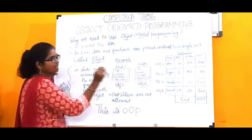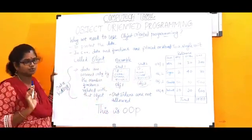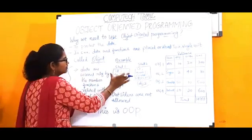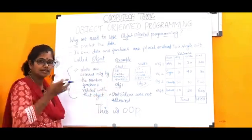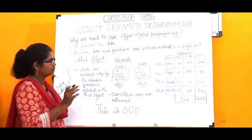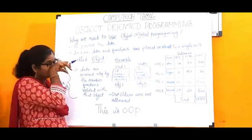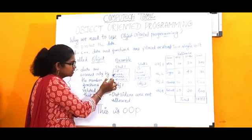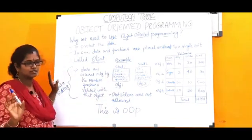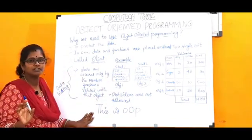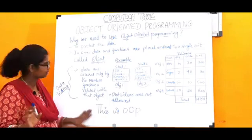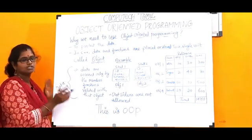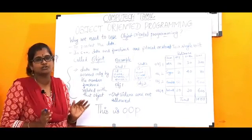This data can be accessed only from within the object. Outsiders are not allowed. This concept is called data hiding. That is why we use Object Oriented Programming.